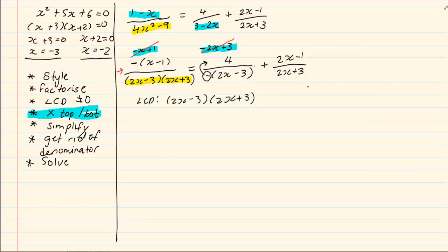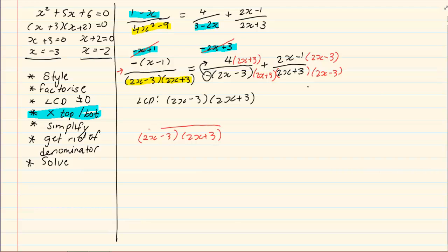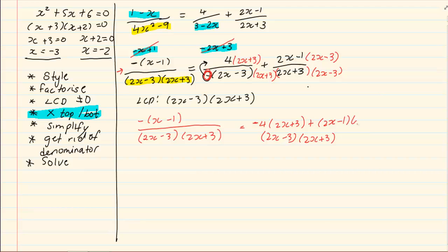In the second expression we are going to multiply it with 2x plus 3 — what you do at the bottom you have to do on top. In the third expression we are going to multiply it with 2x minus 3 — what you do at the bottom you have to do on top. That leaves us with the denominator 2x minus 3 into 2x plus 3, and on the top we have minus into x minus 1 equal to negative 4 into 2x plus 3 plus 2x minus 1 into 2x minus 3.